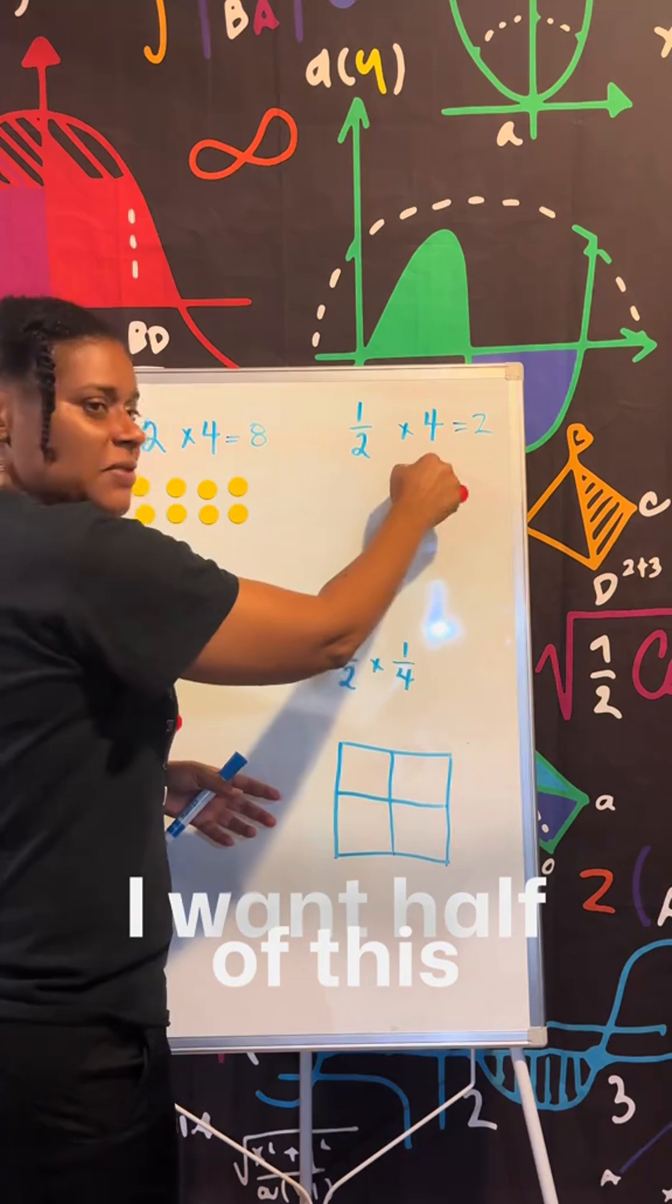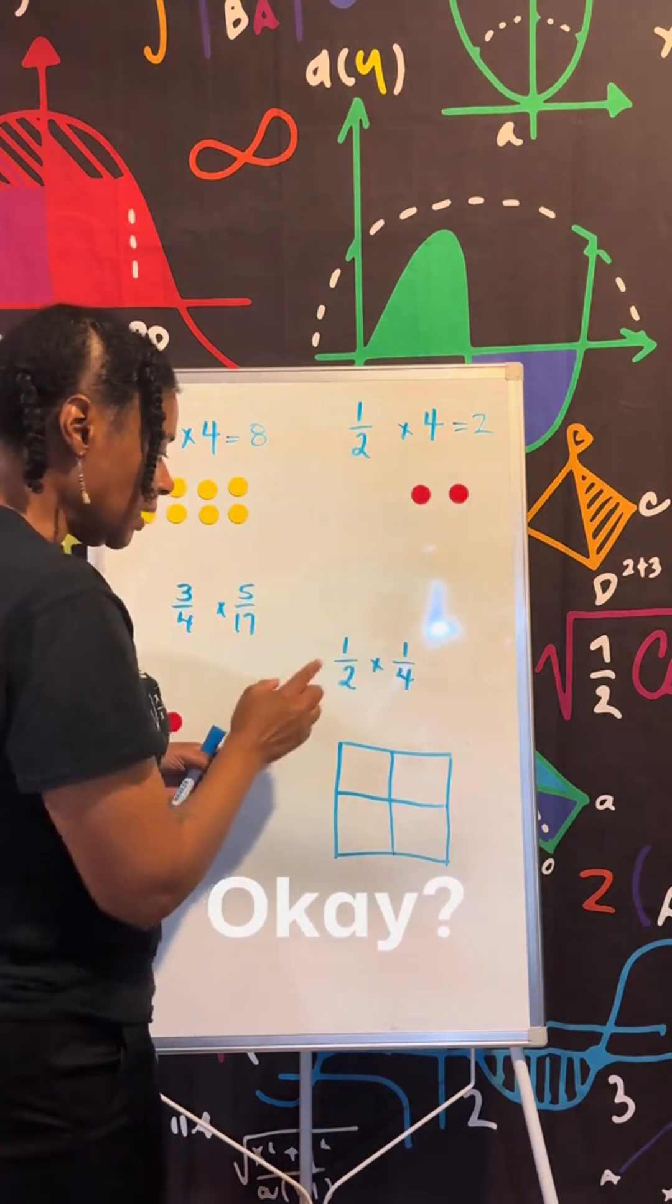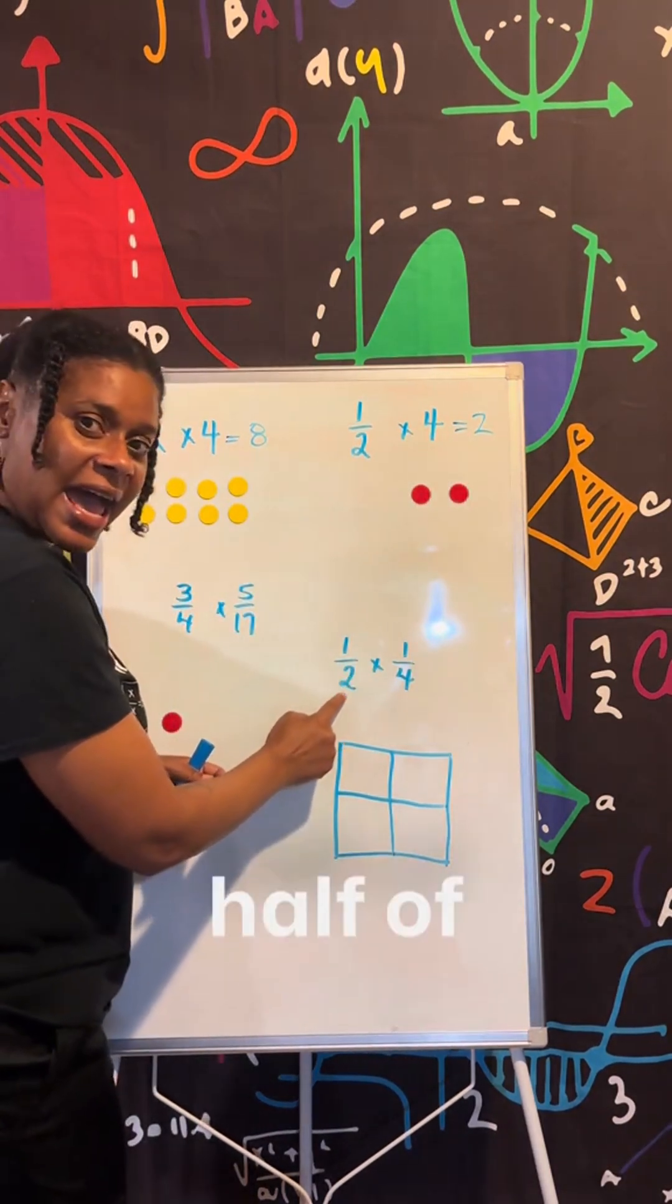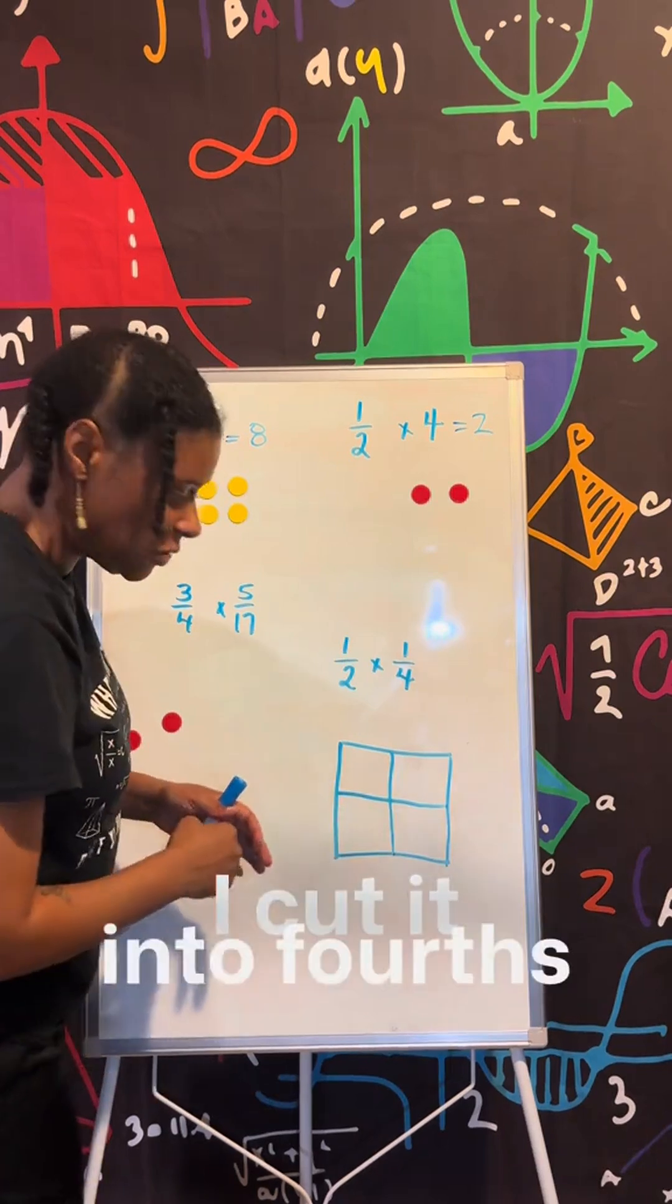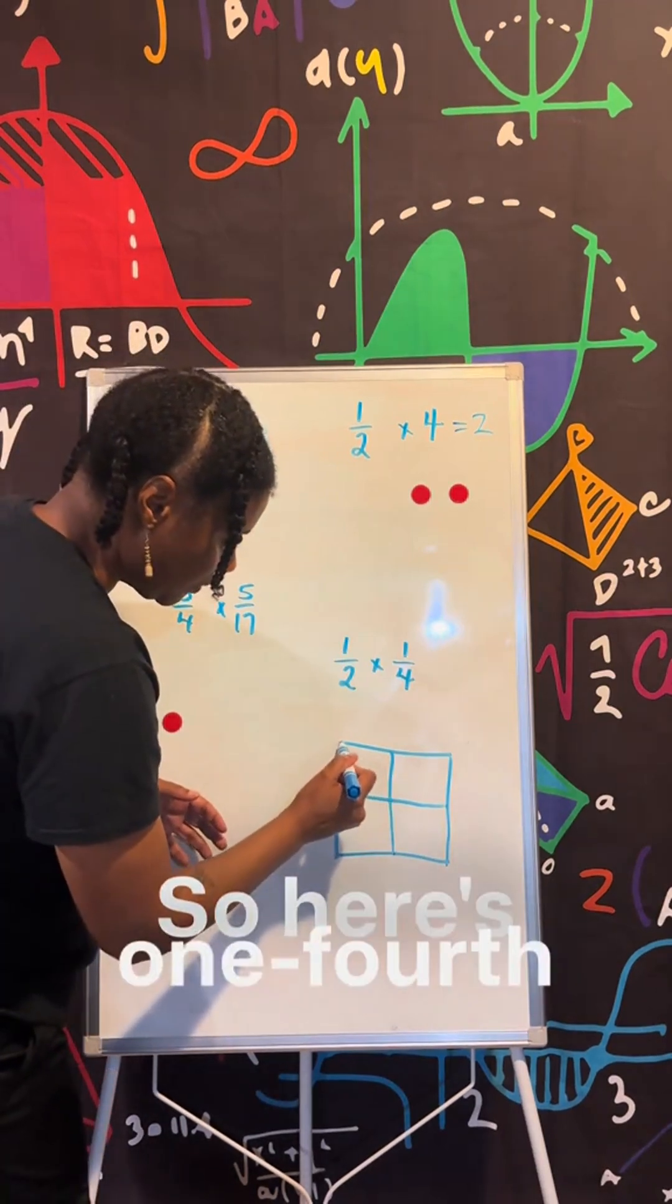I want half of this. OK, now it's saying I want half of one fourth. So here's my piece here. I cut it into fours. So here's one fourth here.